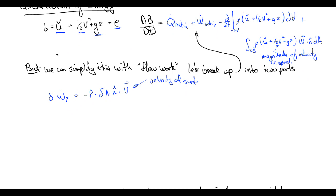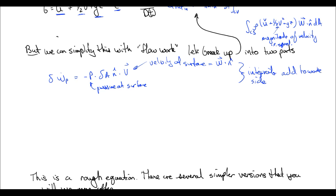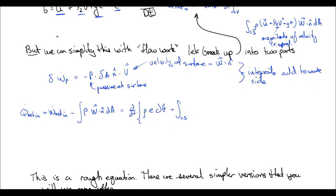This is the pressure at the surface, and this is our differential area. So we can integrate this and add it to the work side, because we want to add up across our surface all the work that the pressure is doing. Our equation then becomes q_dot_net_in plus w_dot_net_in — where w_dot_net_in is now just our shaft work — minus the integral of pressure times w dot n-hat dA, which equals d/dt of the integral of rho times e dV, plus the integral over the control surface of rho e times w dot n-hat dA.